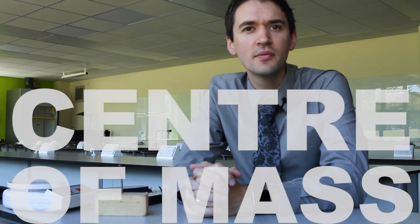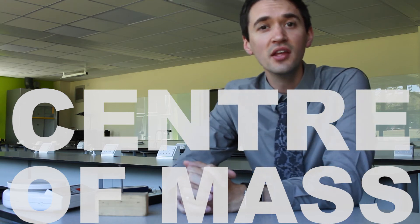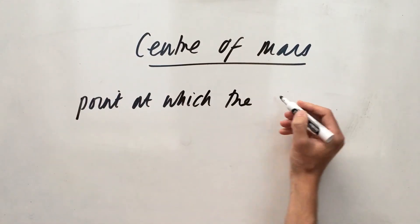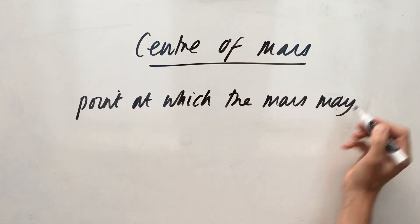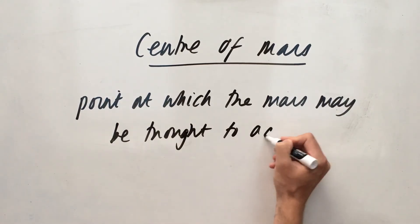Centre of mass. The centre of mass of an object is defined to be the point at which the mass of the object can be considered to be concentrated. You just have to know that definition.